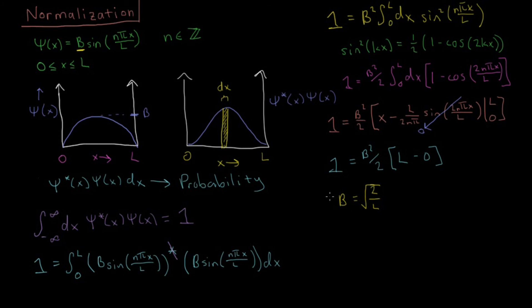So that makes our final result for our wave function: psi of x equals square root of two over L times sine n pi x over L.